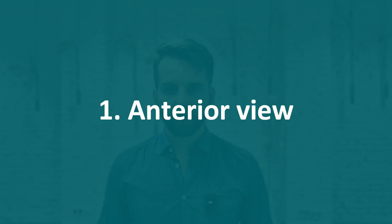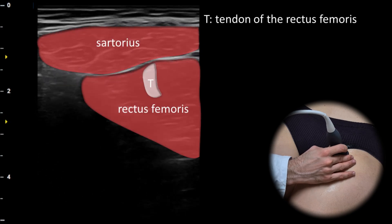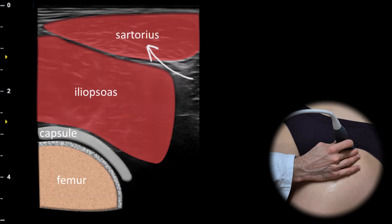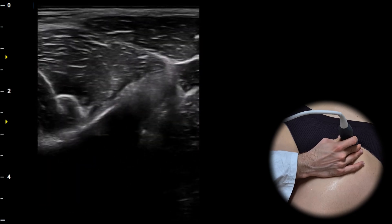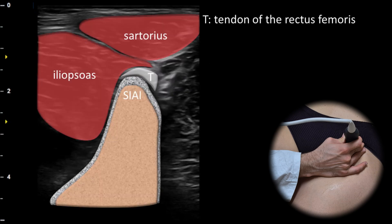The examination begins with the anterior view. In the transverse plane we can visualize the muscles in the short axis. Distally we can assess the sartorius muscle and the rectus femoris muscle with its tendon forming inside the muscle. As we sweep proximally we can evaluate the sartorius muscle, the iliopsoas muscle, and the femoral head covered by the joint capsule. Sweeping even further proximally we can assess the insertion of the rectus femoris tendon at the anterior inferior iliac spine.